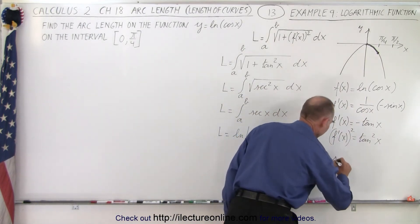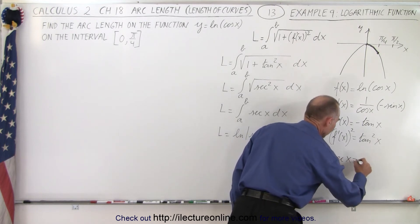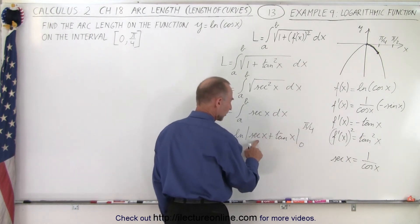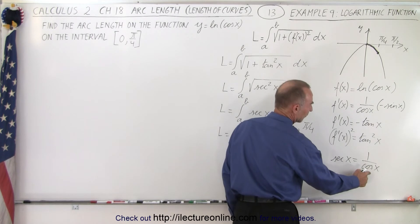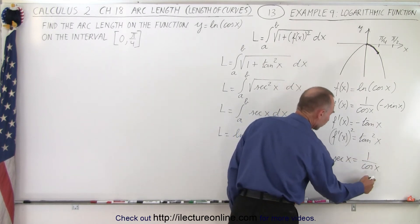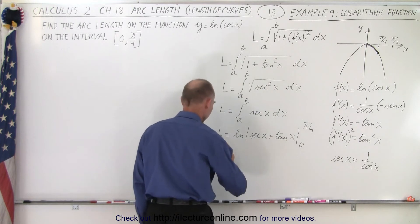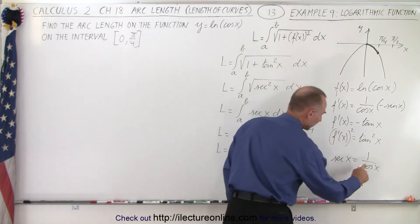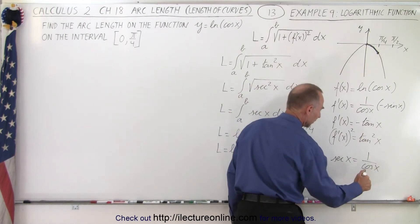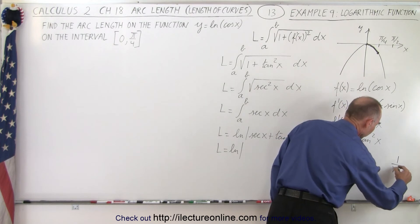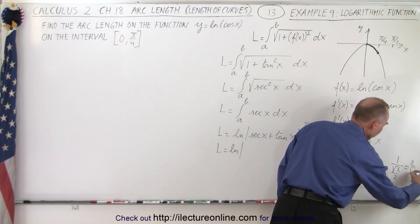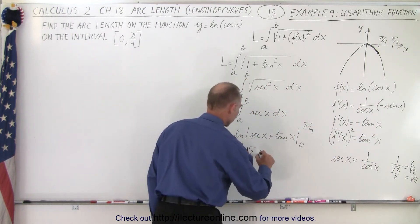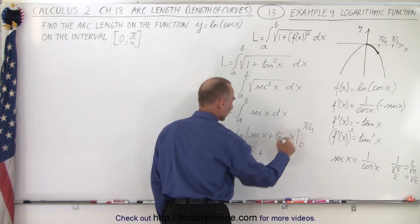When we plug in the upper limit, remember that the secant of x equals 1 over the cosine of x. Plugging in pi over 4, which is 45 degrees: the cosine of 45 is the square root of 2 over 2, so the secant of 45 is 1 over (square root of 2 over 2), which equals 2 over the square root of 2, which simplifies to the square root of 2. So we get the natural log of the square root of 2 plus the tangent of 45 degrees, which is 1.